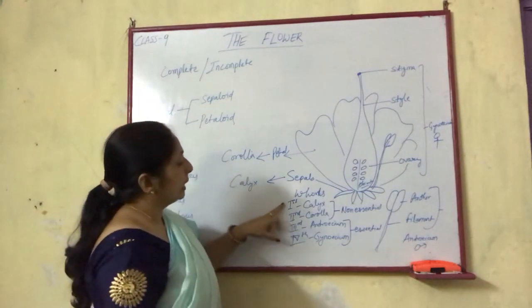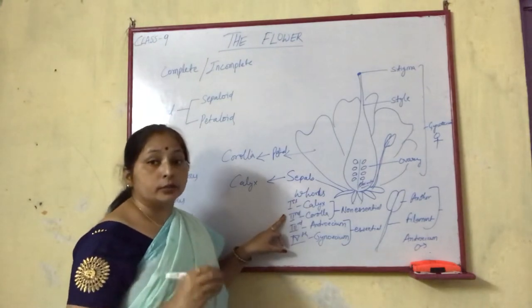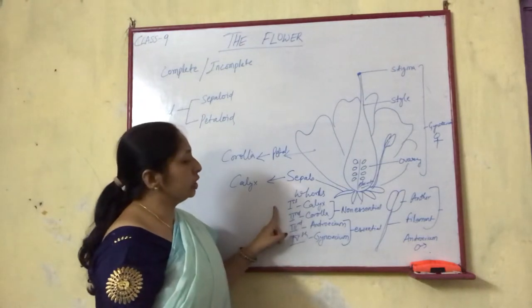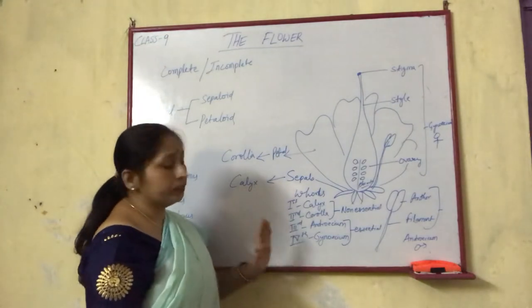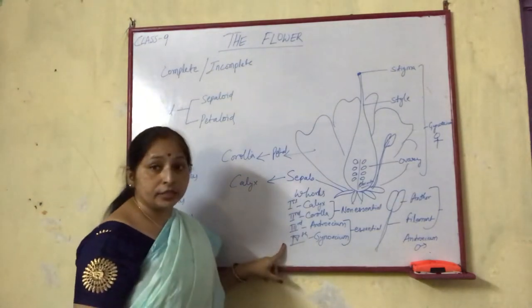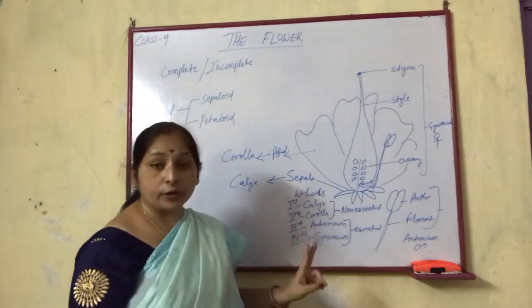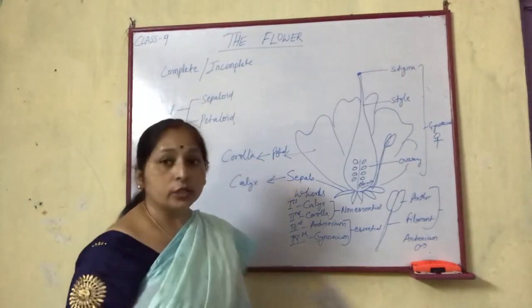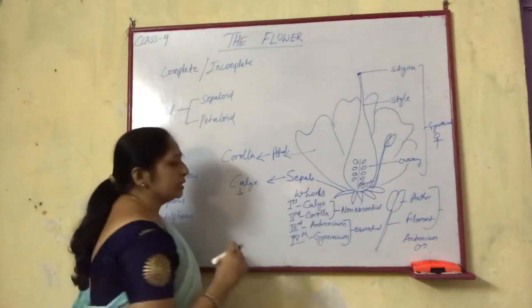Out of the four floral whorls, calyx is the first and corolla is the second floral whorl. These two are termed as non-essential floral whorls, because they are not the reproductive structures — they play a different role which I'll mention shortly. Androecium and gynoecium form the third and fourth whorls, and these are the essential whorls.